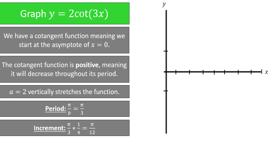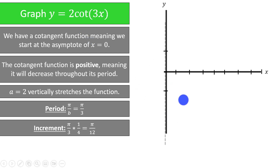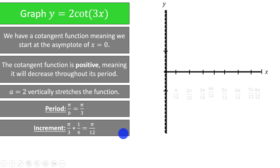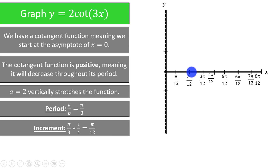It's important to remember that at x equals 0, cotangent begins its period with an asymptote. That will be the case here — nothing we have in this function changes that fact. So we will start with an asymptote right at x equals 0. I'm going to plot two periods, which means that I need to increment 8 times. Here are the x points that we will have on our graph: pi over 12, 2pi over 12, 3pi over 12, 4pi over 12, 5pi over 12.